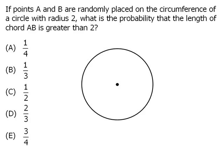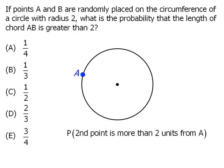Notice that once we've randomly placed our first point, say here, our probability now depends solely on the placement of our second point. So we can write our probability as: what is the probability that the second point is more than two units away from point A?